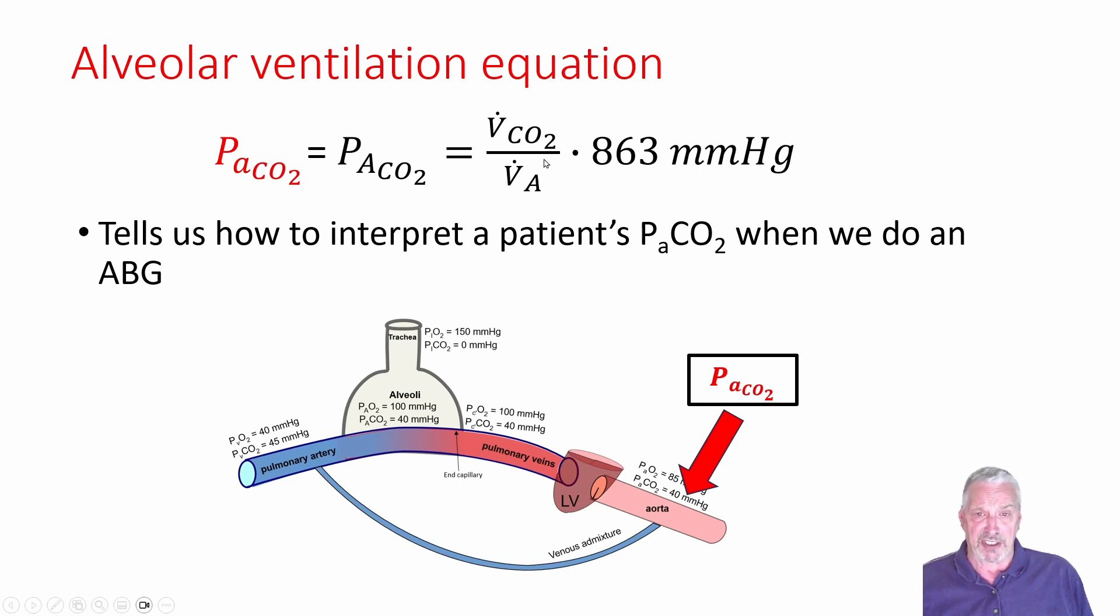We have a V̇CO2, a carbon dioxide production on the other side. So that's one of the things that help determine a patient's PaCO2. And an alveolar ventilation on the other side. So that's the other thing that helps determine a patient's arterial CO2. And then we have a correction factor, which we might ask, where the heck does that number come from, 863?